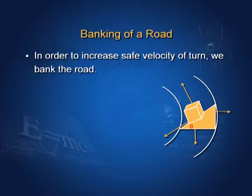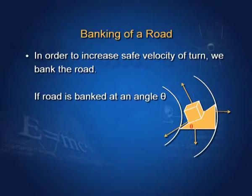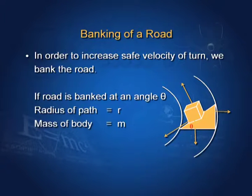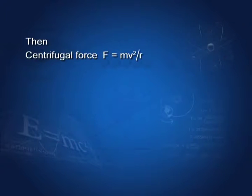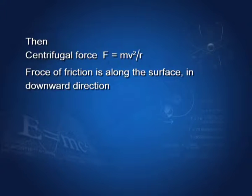Banking of road is the phenomenon of raising the outer edge of the road at some angle. This is done in order to increase the safe velocity of a turn. If the road is banked at an angle theta, radius of the path is R, mass of the body is M, and velocity is V, then centrifugal force F equals Mv² upon R, acting in the outward direction. So the force of friction has to act along the surface in the inward direction.